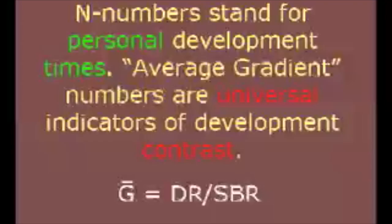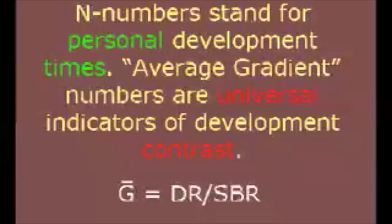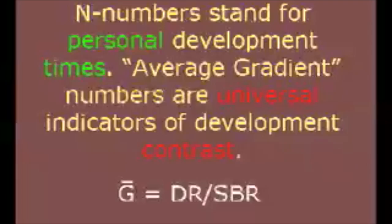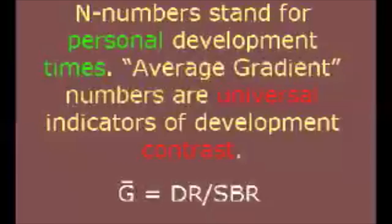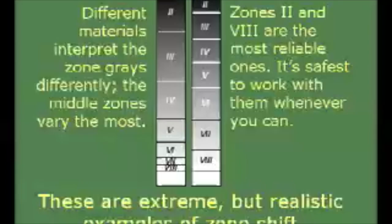N numbers are arbitrary and personal, and they typically relate to specific development times and specific materials. Average gradient values describe the development effect, so they're independent of materials types and procedures. For example, a recommendation of N-minus-1 development is meaningless unless we know what materials and development methods are being referred to. An average gradient number, on the other hand, tells us exactly what degree of negative contrast is required, regardless of the materials or techniques we choose to employ.